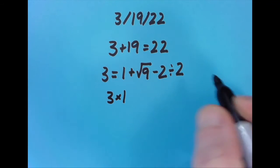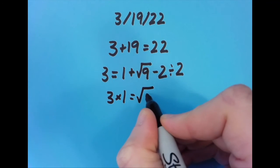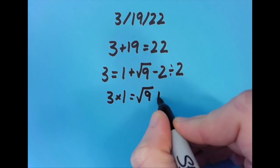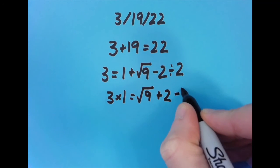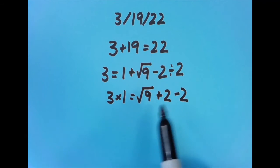So I then said 3 times 1 equals the square root of 9 plus 2 minus 2. So this gives us 3 plus 2 is 5, minus 2 is 3. And so is 3 times 1.